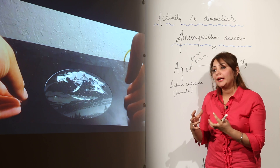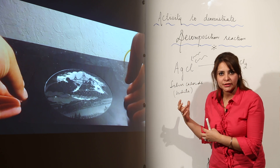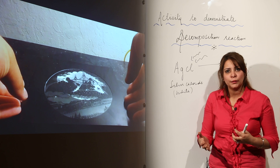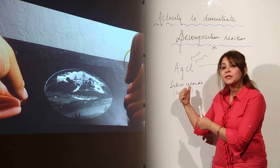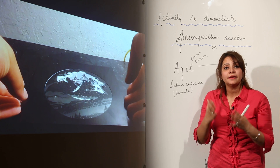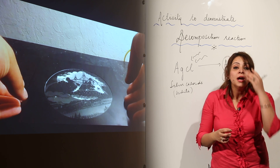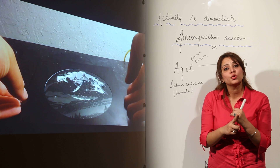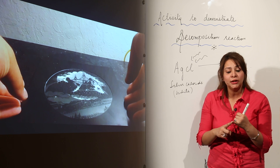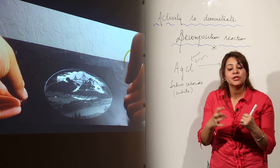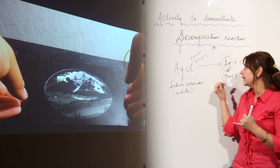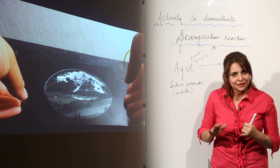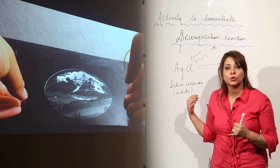Where do we use AgCl, and why do we store it carefully? This applies to other silver halides as well — for example, silver bromide (AgBr) behaves similarly. There is a requirement that if we want to store AgCl or AgBr, we must store them in colored bottles. The reason is that a transparent bottle allows light to enter, and when light enters, the AgCl will decompose into silver and chlorine. To prevent this decomposition, it is stored in a colored bottle.